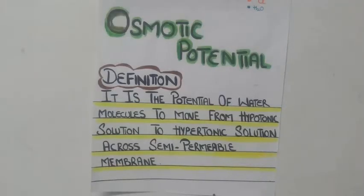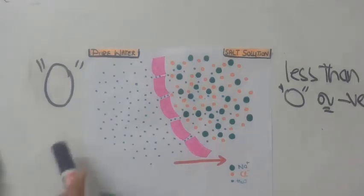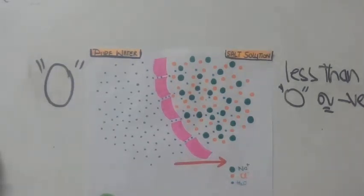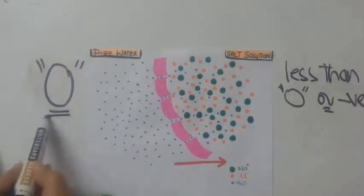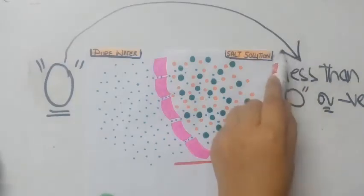Osmotic potential is defined as the potential of water molecules to move from a hypotonic solution to a hypertonic solution across a semi-permeable membrane. In osmotic potential, pure water is taken as a reference, so the osmotic potential of pure water is zero, whereas any solution — whether salt solution or sugar solution — all types of solutions will have osmotic potential less than zero, or negative.